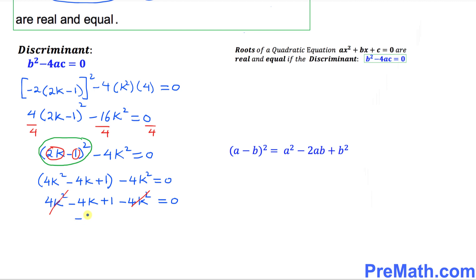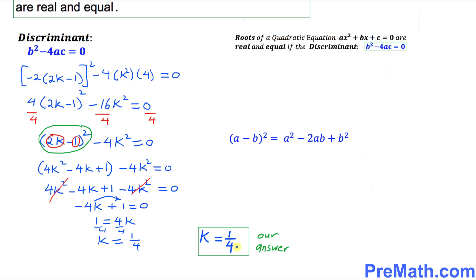So we got -4k + 1 = 0. I want you to move this -4k on the other side, becomes positive 4k. So next thing is k = 1/4 if we divide both sides by 4. Thus k = 1/4 is our k value and that is our answer.